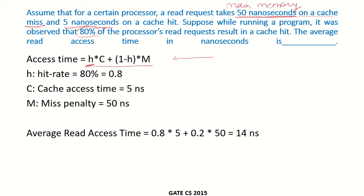In this equation, h is the hit rate multiplied by c, the cache access time. Then (1 - h) is the miss rate — when data is not found in the cache — multiplied by m, the miss penalty. The miss penalty includes the time to check the cache, not find the address, and then access main memory.